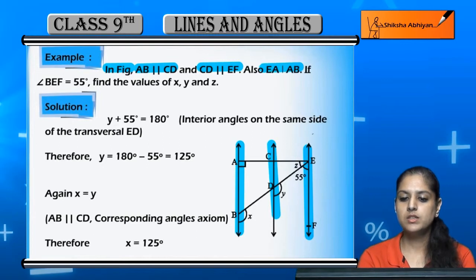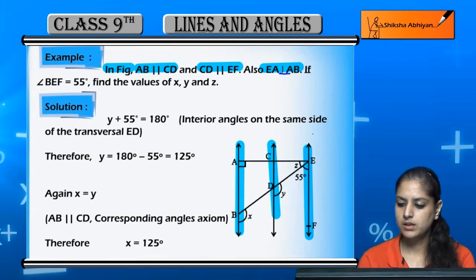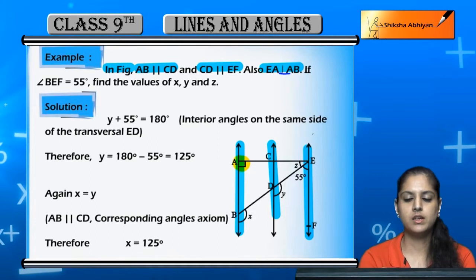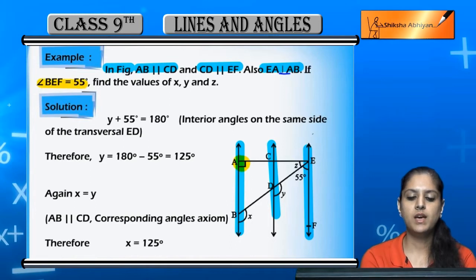AB is parallel to CD and CD is parallel to EF, where angle BAE is 90 degrees. We have to find the values of x, y, and z if angle BEF is 55 degrees.